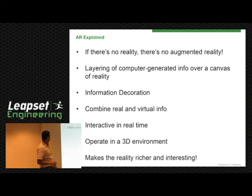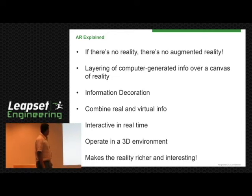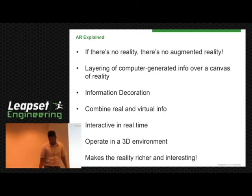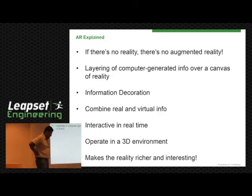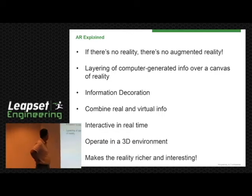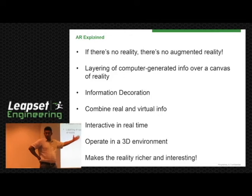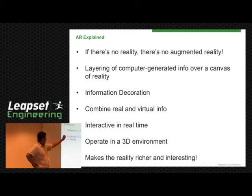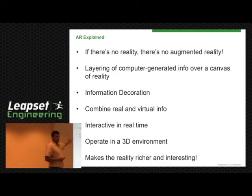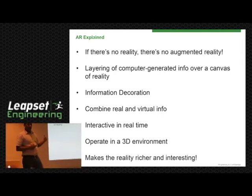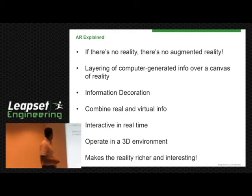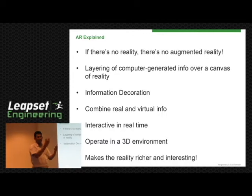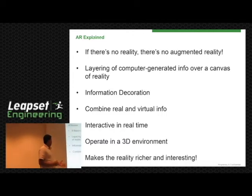Let's explain augmented reality in multiple ways. If there is no reality, there is no augmented reality — there is nothing to augment. The first definition is: a layer of computer-generated information over a canvas of reality. The canvas of reality is your camera view most of the time, and you get a layer of information — which could be text, graphics, etc. Another example is information decoration: you have reality, you bring a rich layer of information which is a decoration. It combines the real world with the virtual.